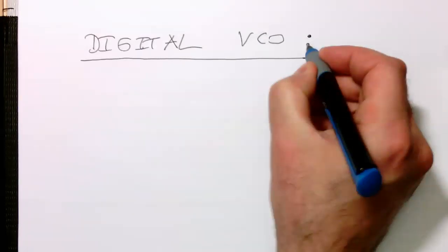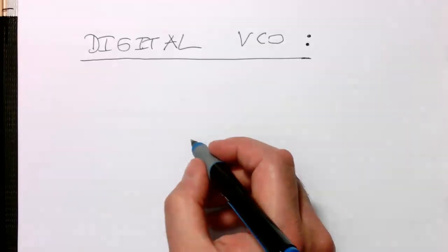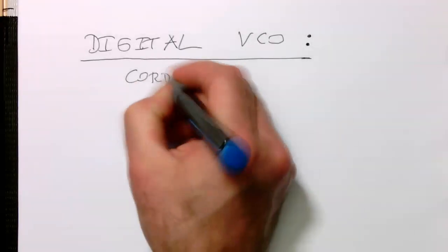And there are different ways of doing this. One would be just a table, for example, but there's a more elegant way of doing this. And this is the so-called CORDIC algorithm.